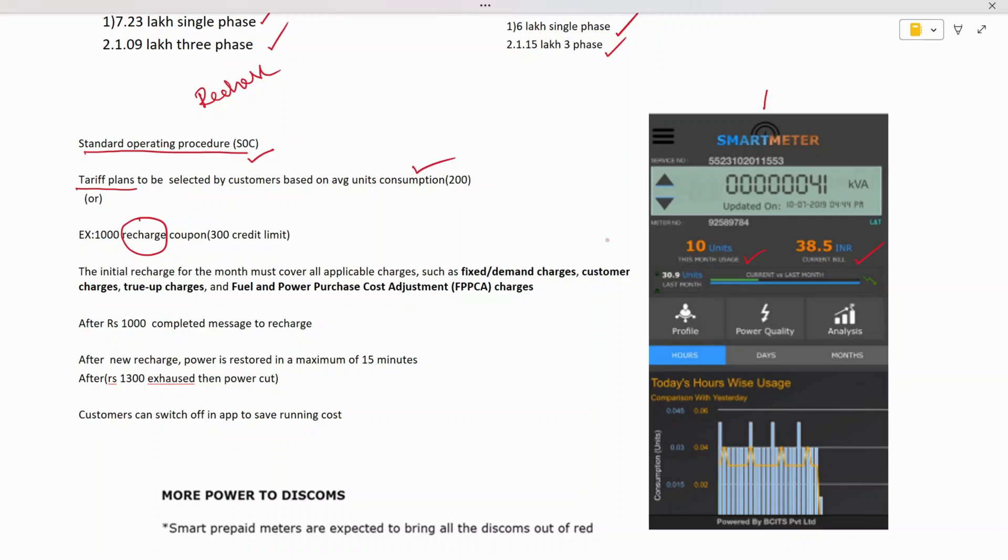For example, we've selected a thousand rupees recharge coupon which comes with an additional 300 rupee credit limit. They will give us some credit, so this 300 rupees we can use whenever the thousand rupees is completed. This is the first recharge or basic recharge plan.